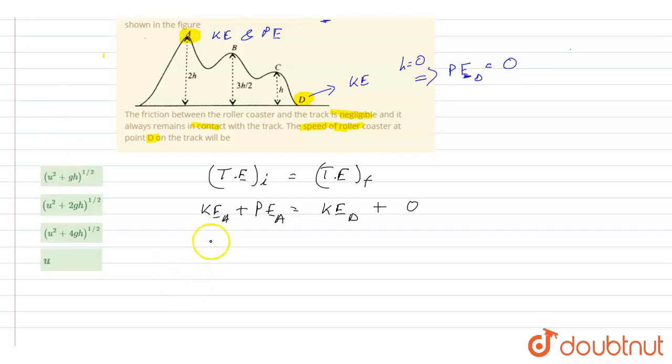If I write for kinetic energy at D, that means kinetic energy at D will be 0.5 M V square, some final velocity V. That will be equal to kinetic energy at A is 0.5 M U square, plus M G. The height at point A is 2H. I can cancel off M from here.